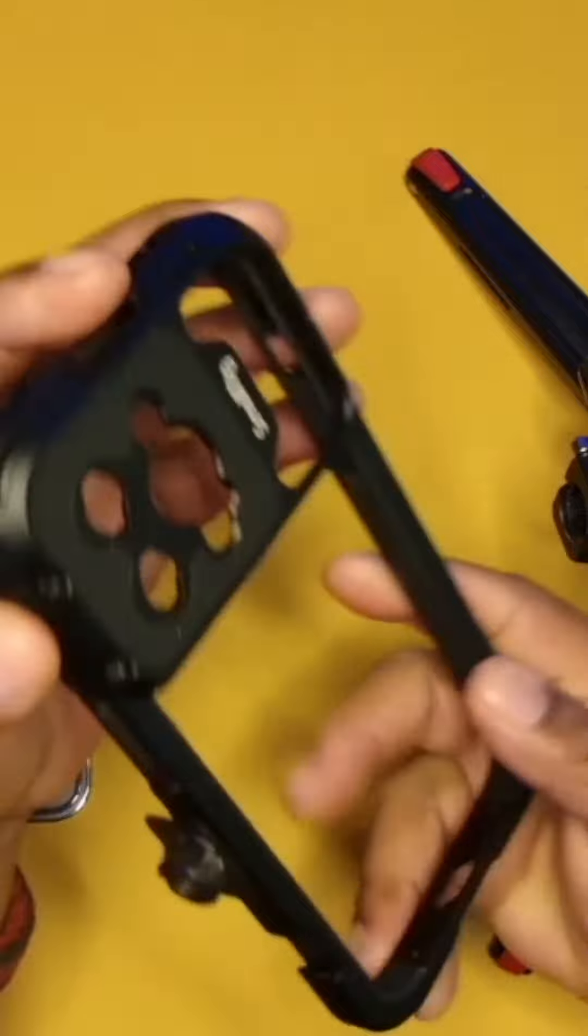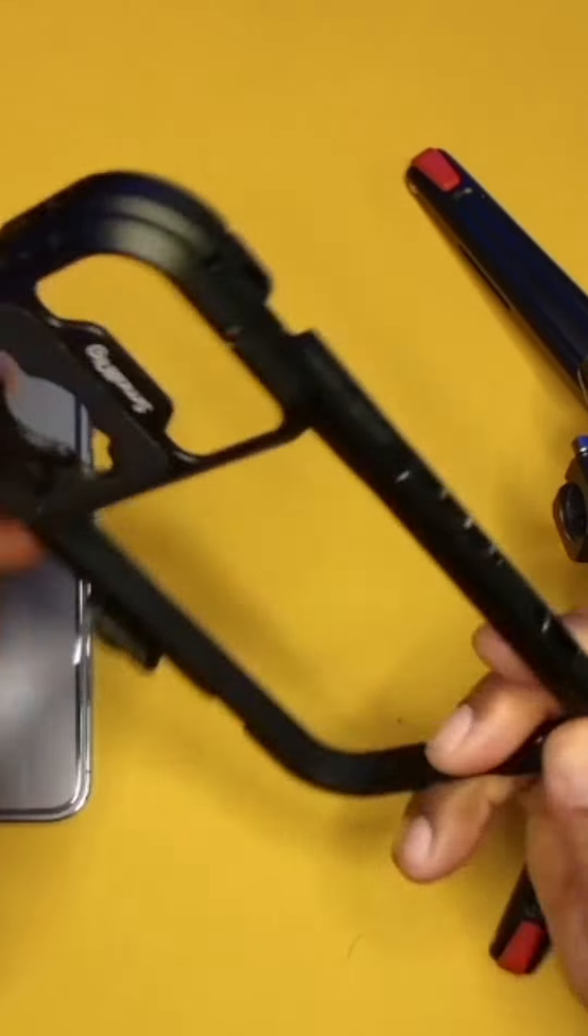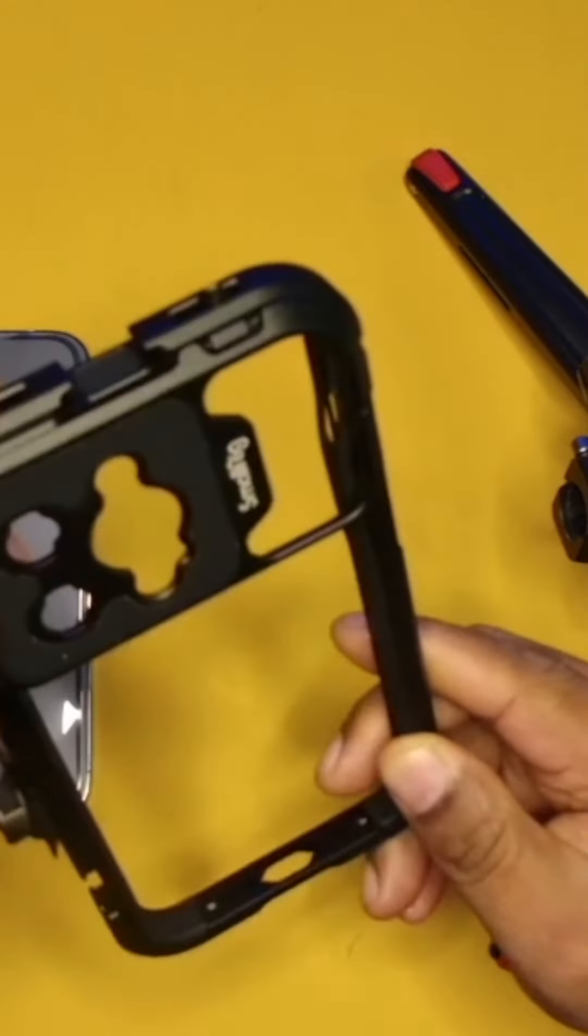One of them is this SmallRig cage. This one comes with a number of quarter-20s as well as some cold shoe mounts.